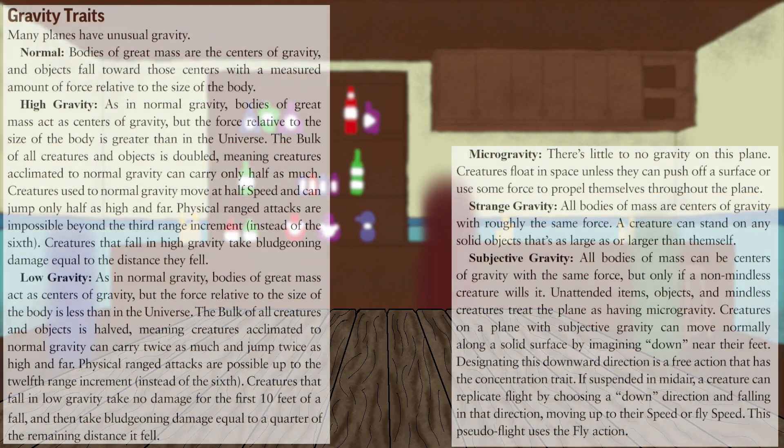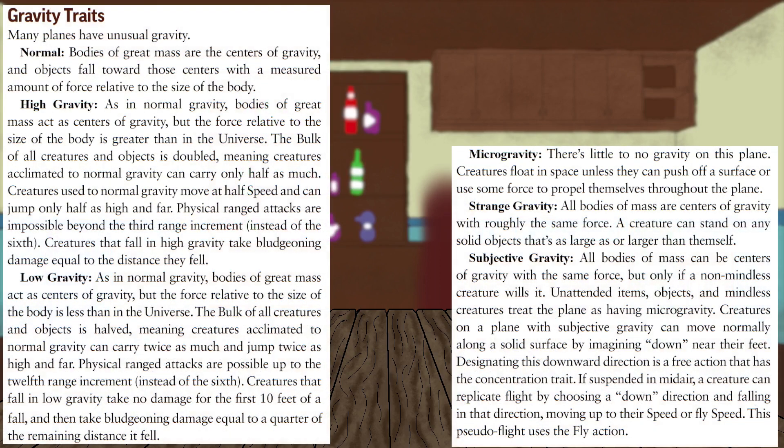Gravity traits describe how gravity works on the different planes. The normal gravity trait means gravity acts on and is created by mass. In planes with normal gravity, massive objects like planets are needed for any meaningful amount of gravity.